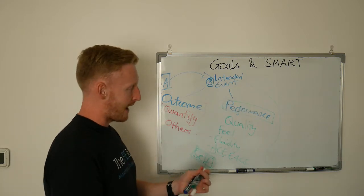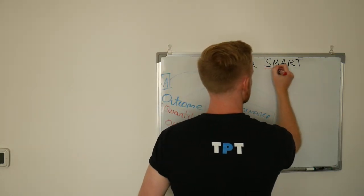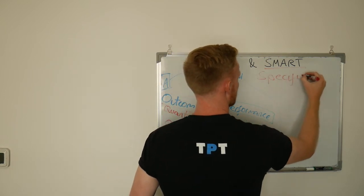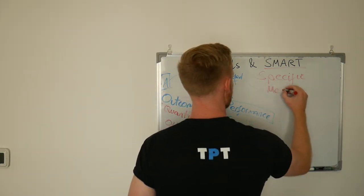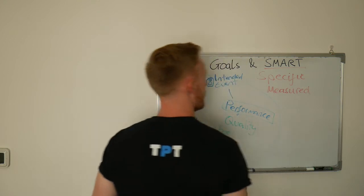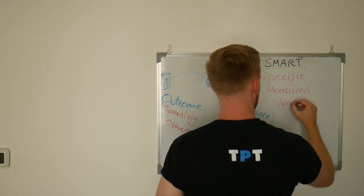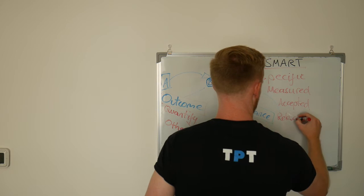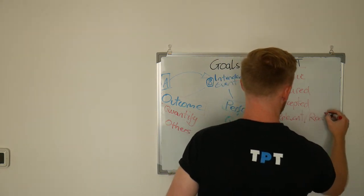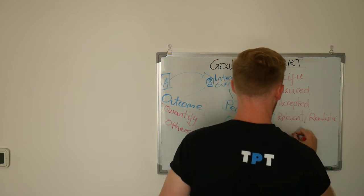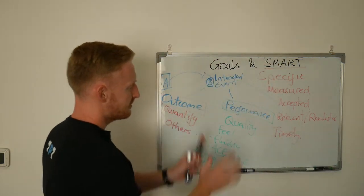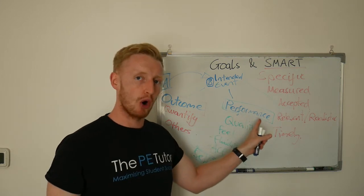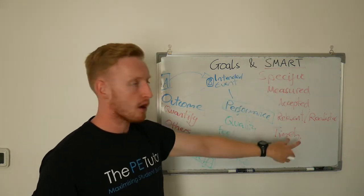On the other side, we are now looking at SMART targets. SMART stands for Specific, Measurable, Accepted, Relevant or Realistic, and Time-bound or Timely. This is almost the second phase of goal setting. Whether you use an outcome-based goal or a performance-based goal, you should try to put it into the SMART target structure.